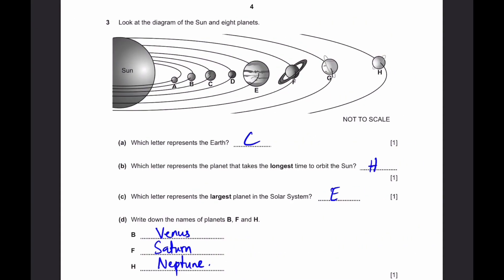Question 3. Look at the diagram of the sun and 8 planets. Which letter represents the earth? That's simply C because the third planet from the sun. Which letter represents the planet that takes the longest time to orbit the sun? That's simply H. Neptune. Because it's furthest away from the sun.